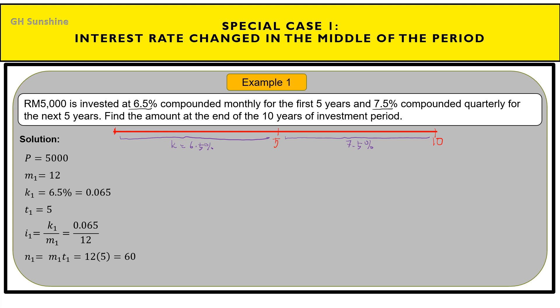First, list all the values. The principal value is RM5,000. M — the frequency — based on the word 'compounded monthly' means M equals 12. The interest rate K equals 6.5%, and the first term T equals 5 years. From K and M we calculate the periodic interest rate I, which is 0.065 over 12, and the number of periods N equals 60. The total amount for the first 5 years equals RM6,914.09.